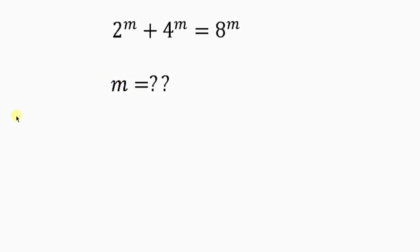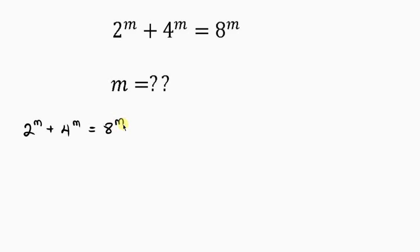So let's work with the given expression: 2 to the power of m plus 4 to the power of m equal to 8 to the power of m. Now ask yourself, what is the lowest value among 2, 4, and 8? 2 is the lowest value.